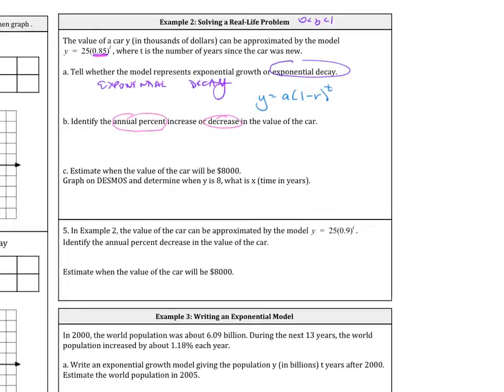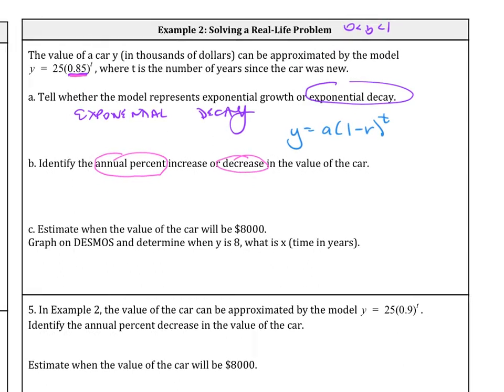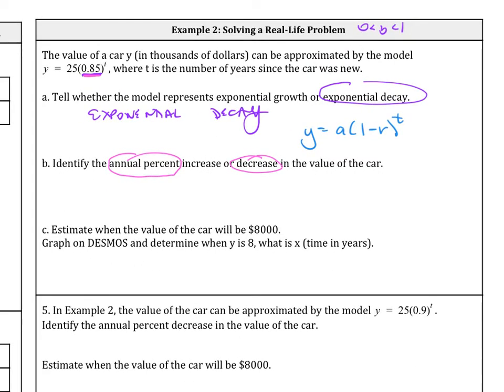So what we're going to do in order to solve for this is you're going to take this 1 minus r here, and we're going to set that equal to what's inside here in order to solve for r. So 0.85 equals 1 minus r.